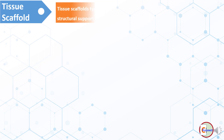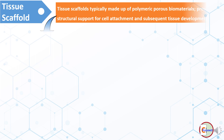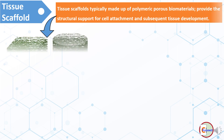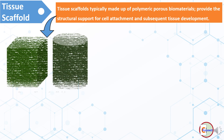Tissue scaffolds are typically made up of polymeric porous biomaterials, which provide the structural support for cell attachment and subsequent development of tissues. These can be of different shapes and geometry, depending upon the sites of application.